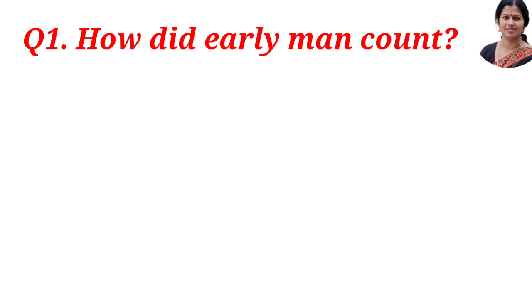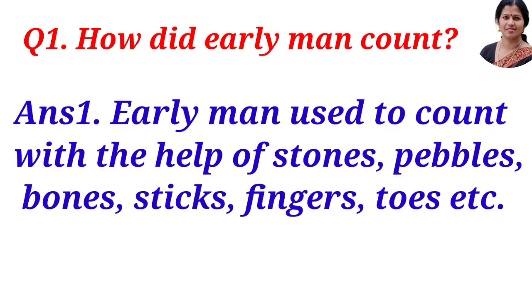Now question answers. Question one: how did early man count? Answer: early man used to count with the help of stones, pebbles, bones, sticks, fingers, toes, etc.